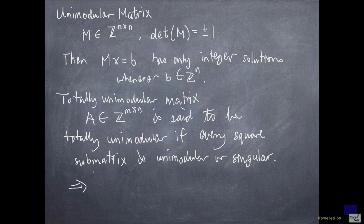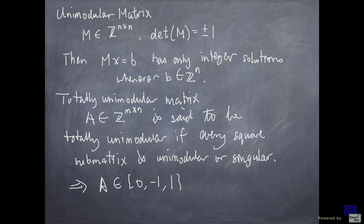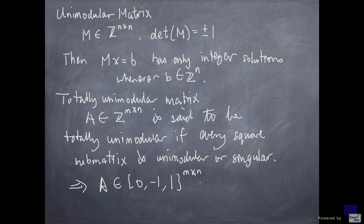One consequence of this is that A must be a 0, 1, minus 1 matrix. Because every 1 by 1 matrix has to be either singular, which means 0, or has determinant 1 or minus 1. In this case, the 1 by 1 matrix has to be either just consisting of 1 or minus 1. So this is the first property. Now, there is a very special class of totally unimodular matrix.